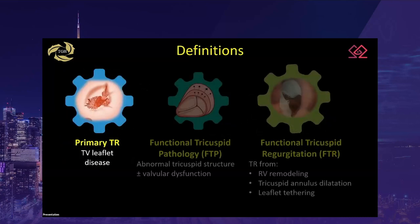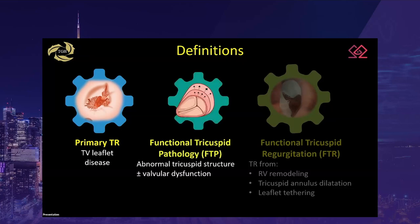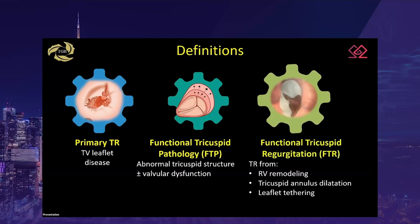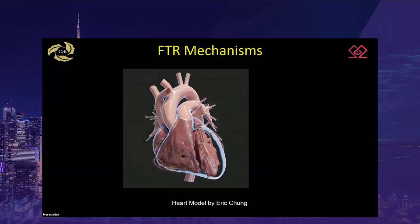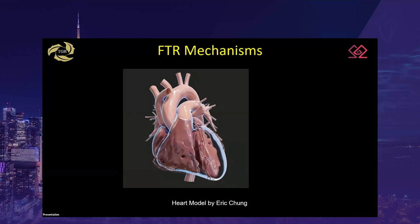Primary tricuspid regurgitation results from tricuspid valve leaflet disease and is uncommon. Functional tricuspid pathology, or FTP, is geometrical distortion of the normal spatial relationships of the tricuspid valve structure that may lead to valvular dysfunction. Functional tricuspid regurgitation follows from functional tricuspid pathology related to right ventricular remodeling, tricuspid annulus dilatation, and leaflet tethering. FTR can be categorized by the mechanism associated with the morphologic abnormality of the tricuspid apparatus, or by the etiology.